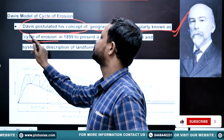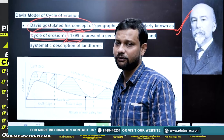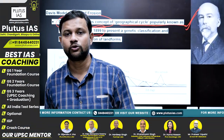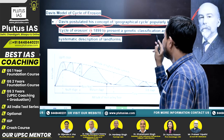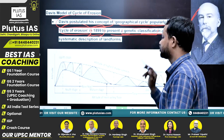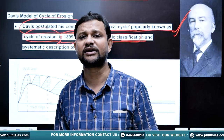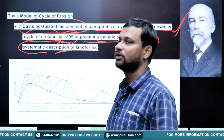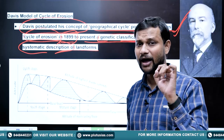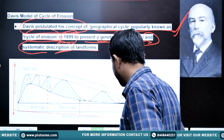Davis postulated his concept of the geographical cycle, popularly known as the cycle of erosion, in 1899. This fact will help you introduce your answer. He presented a genetic classification — that is, identifying the genetical reasons and systematic description of landforms. For that purpose, he also gave a graph.